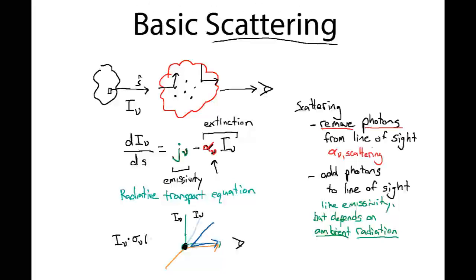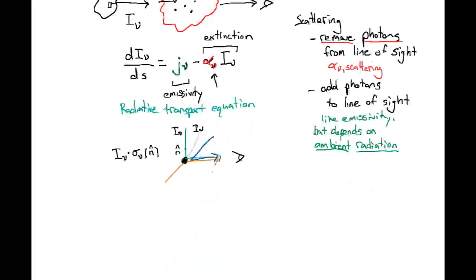So this scattering coefficient potentially could be a function of direction. So n-hat here describes all the different directions that light could be coming in from. And ultimately, the amount of light that we receive here at the observer from the single scatterer is going to be the integral of the radiation coming in from all different directions times the cross-section for scattering in each of those directions.